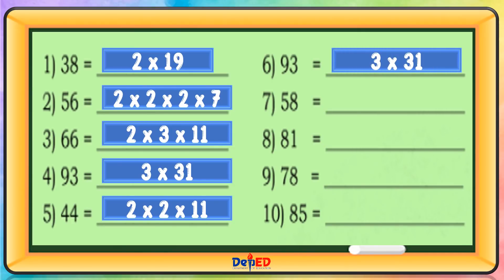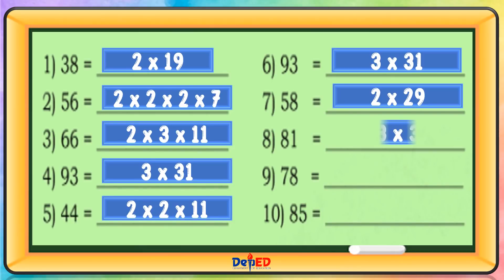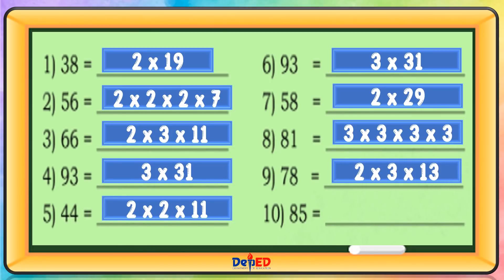58 is 2 times 29. 81 is 3 times 3 times 3 times 3. 78 is 2 times 3 times 13. 85 is 5 times 17.